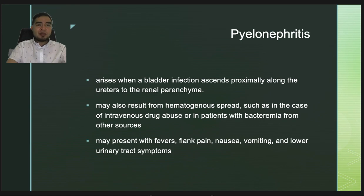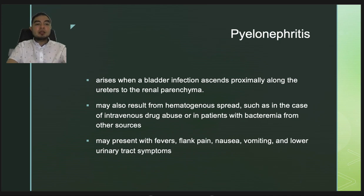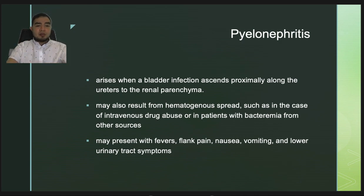The next type of infection is pyelonephritis. It arises when a bladder infection ascends proximally along the ureters to the renal parenchyma. It may also result from hematogenous spread, such as in intravenous drug users or patients with bacteremia. Patients with pyelonephritis may present with fevers, flank pain, nausea, vomiting, and lower urinary tract symptoms.